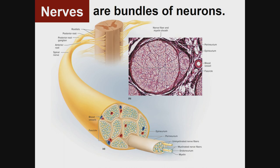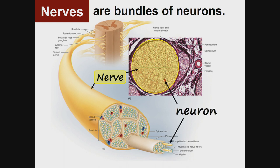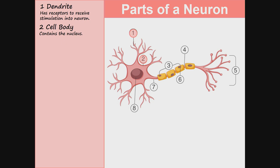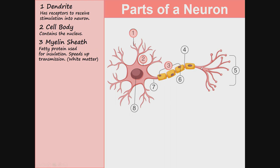Nerves are bundles of neurons, so here we see a big nerve cell made of many many neurons. Parts of a neuron: dendrites have receptors to receive stimulation into the neuron, and the cell body contains the nucleus.